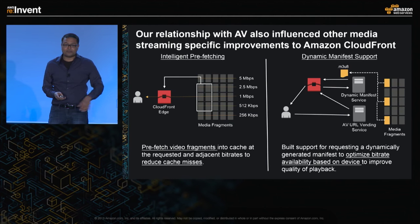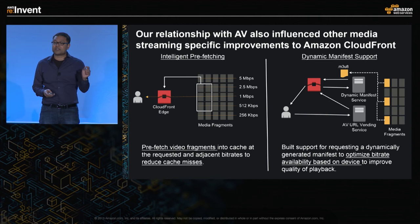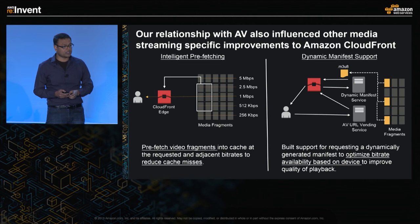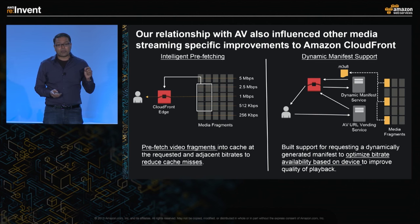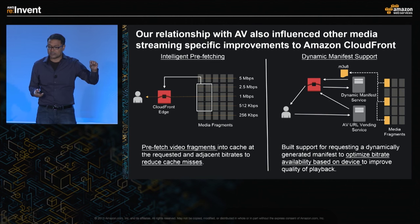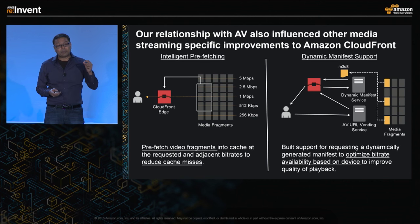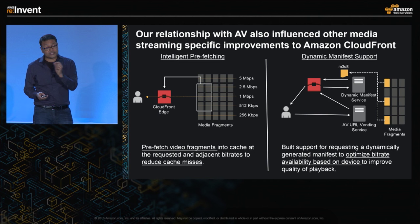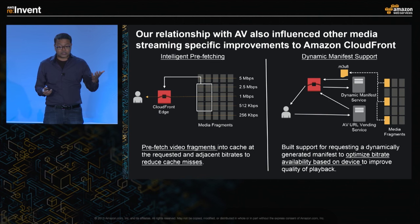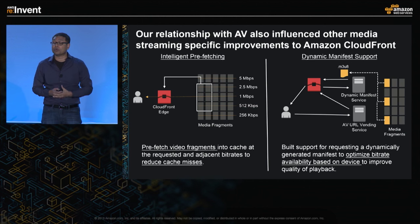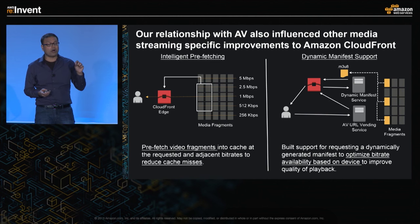In addition to quality of delivery, there were many things we had to do specific to the device or player consuming this content. Two key improvements: one was intelligent prefetching — depending on the bit rate being streamed, we would prefetch some bit rates intelligently based on what we expect the client would potentially require. A second improvement was dynamic manifest support — some players require an optimal set of bit rates to improve playback experience, so we had to change the manifest file dynamically to provide those players with the right bit rates depending on the specific networks they were in.